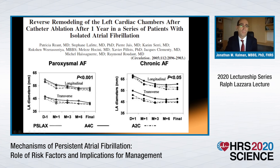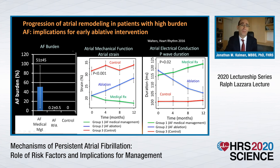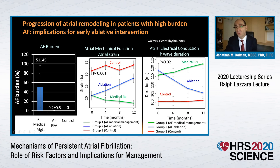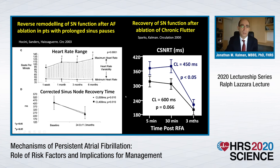An early study from the Bordeaux group shows that in both paroxysmal and chronic atrial fibrillation, there is significant reduction in atrial dimensions — reverse structural remodelling. Thomas Walters in our group demonstrated that with reduction in AF burden with ablation compared with medical management, there is recovery of atrial mechanical function. Atrial strain improves, not quite back to control levels, but certainly more than the progressive deterioration seen in the medical treatment arm. Markers of electrical conduction also improve, almost back to the control group, versus progressive conduction slowing in the medical arm.